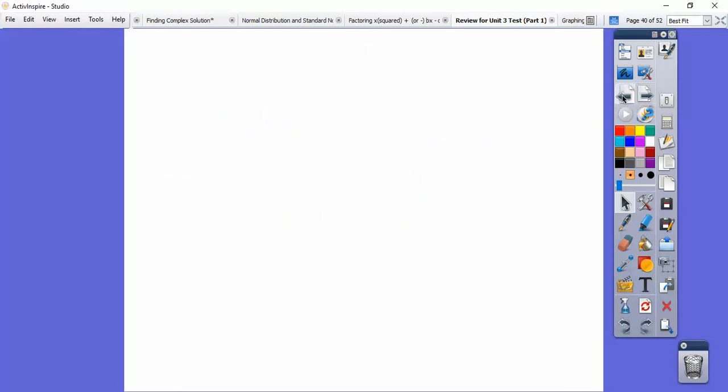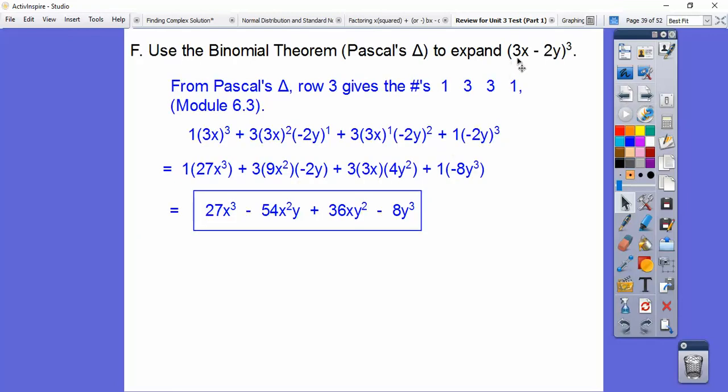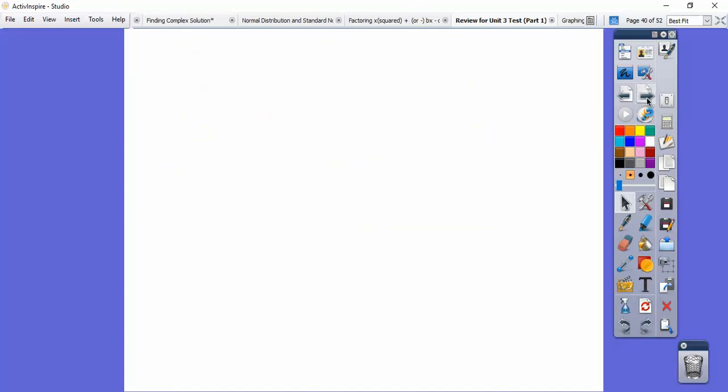Now what you could do if you didn't know how to do that is write this 3 times and foil it out 3 times. 3x minus 2y times 3x minus 2y, foil it out, and then multiply one more 3x minus 2y. You'll get the same answer, but Pascal's triangle is a little bit easier.